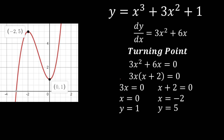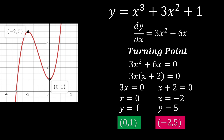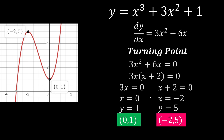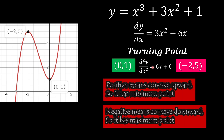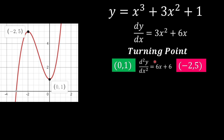Now we know the coordinates of our turning points: (0, 1) and (−2, 5). We want to confirm whether each is a maximum or minimum. We can use d²y/dx². As we recall: positive second derivative means concave upward, which means minimum; concave downward means maximum. We differentiate the gradient function one more time to get d²y/dx² = 6x + 6.